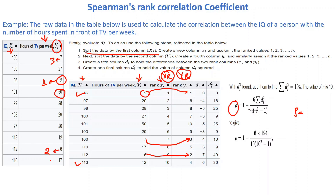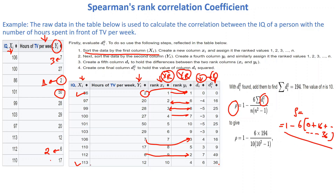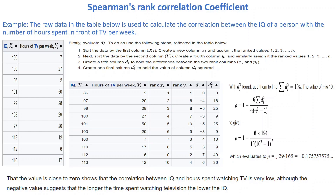Using the formula 1 minus 6 times summation of di squared, divided by n times (n squared minus 1): di is the difference between xr and yr for each observation — for example, 1 minus 1 equals 0, 2 minus 6 equals minus 4, 3 minus 8 equals minus 5, and so on. After computing all differences and squaring them, we sum them: 0 plus 16 plus 36 and so on. With n equals 10, we plug into the formula and calculate the result.